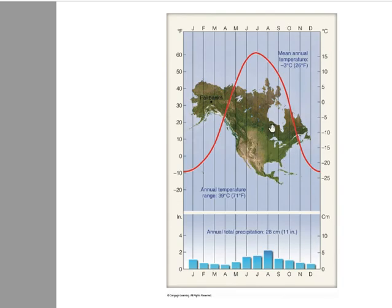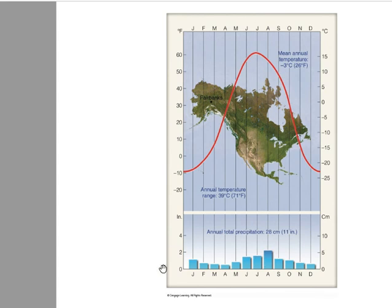Fairbanks, Alaska is considered subpolar because of its northern latitude. There is a big contrast in temperature, with much colder readings overall — average winter highs around negative 10 degrees but summers just above 60 degrees. The moisture content is lower, but still enough to support some vegetation and trees, though you start to see the types of vegetation change with those colder temperatures.